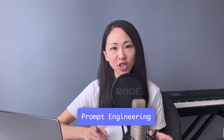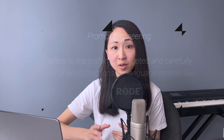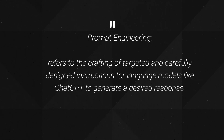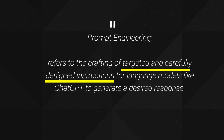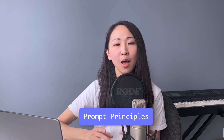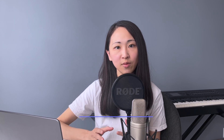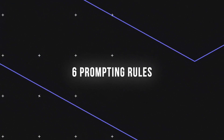Before we talk about each prompt, you'll need to first understand some basics about prompt engineering. If you've used ChatGPT for a while, you've probably noticed that the more context you give it, the more accurate the response you'll get. This is what we call prompt engineering — the crafting of targeted and carefully designed instructions for language models like ChatGPT to generate a desired response. There are many prompt principles to get a good response, but these are the top six I've found very effective.